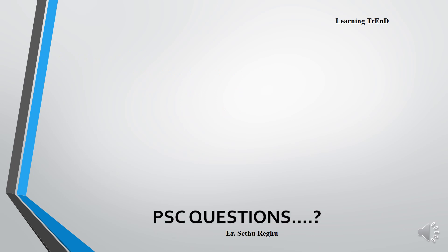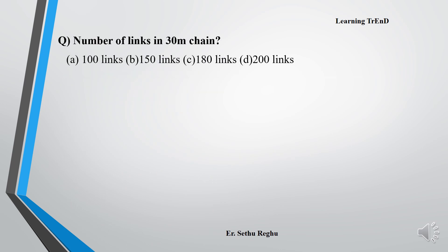We will discuss these questions. First question: Number of links in 30 meter chain. Options are 100 links, 150 links, 180 links, and 200 links. What is the answer? Option B, 150 links.